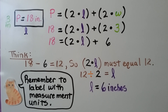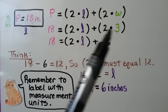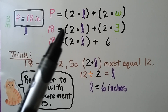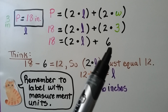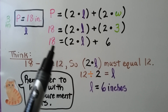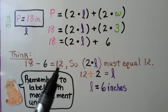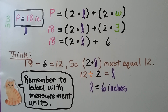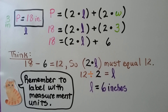The formula says perimeter equals 2 times the length plus 2 times the width. We know the width is 3, so that's 2 times 3. We know the perimeter is 18, so 18 equals 2 times l plus 6. We think 18 minus 6 is 12, so 2 times the length must be 12. Then 12 divided by 2 equals 6 — so l, the length, equals 6 inches. Remember to label with the measurement units.